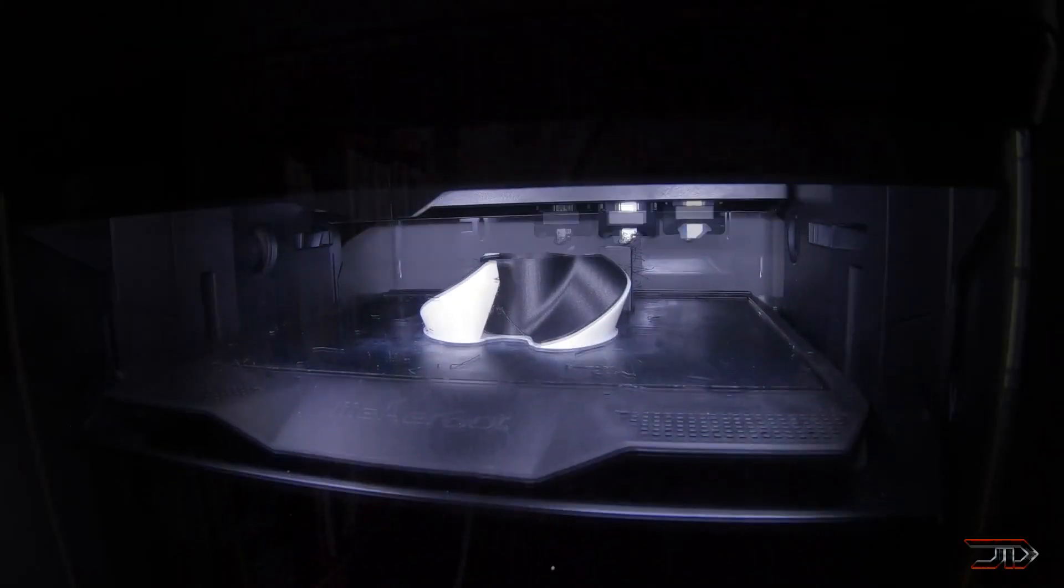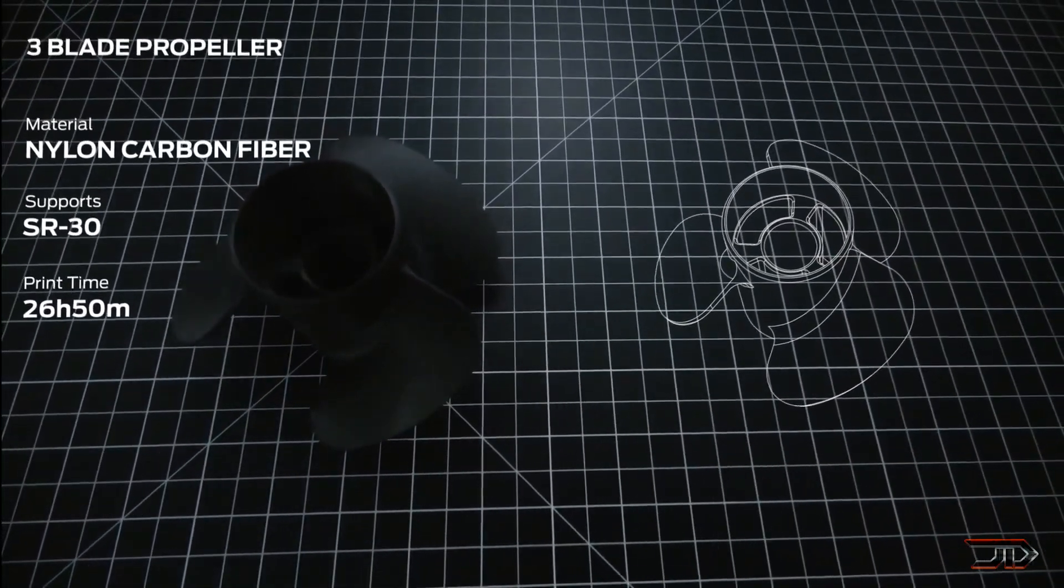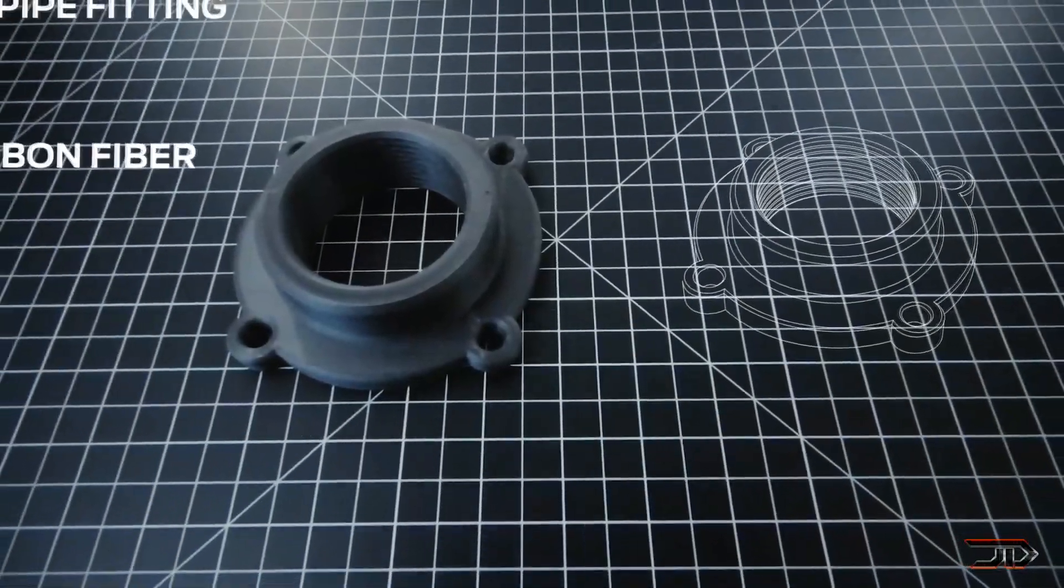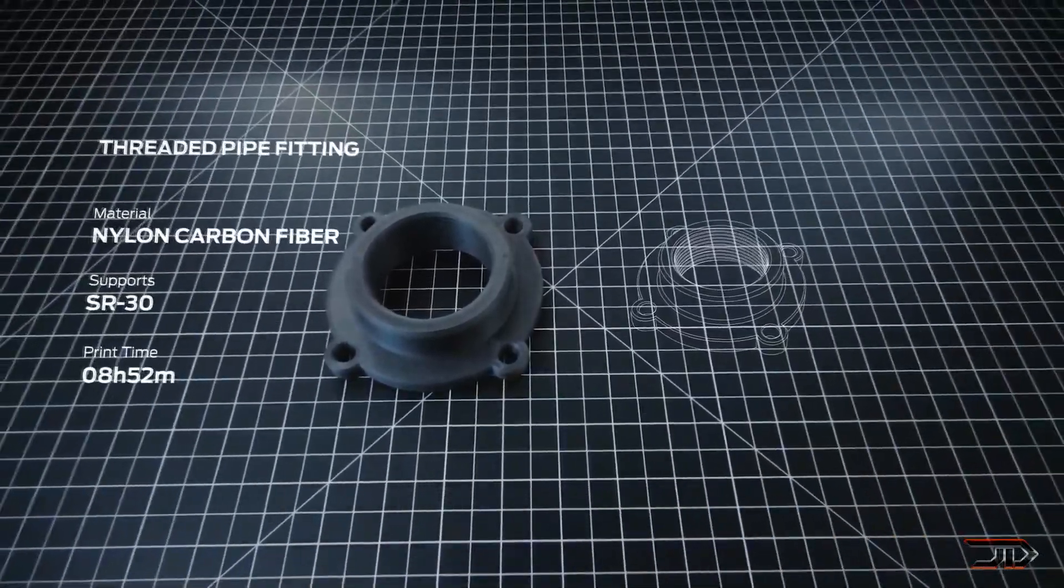And the material also has a heat deflection of 184 degrees Celsius, which is roughly 100 degrees more than ABS. So in the end, you can replace some metal parts, but it's definitely not going to replace your whole machine shop.